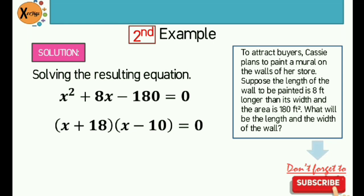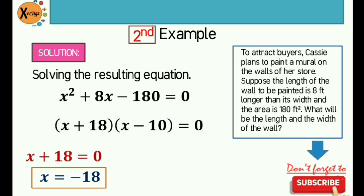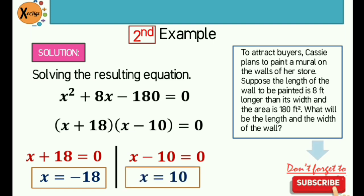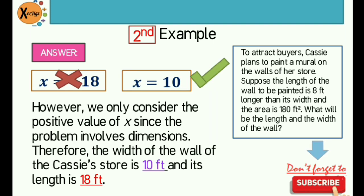Applying the zero product rule: x + 18 = 0 gives x = −18, and x − 10 = 0 gives x = 10. However, we only consider the positive value of x since the problem involves dimensions — there is no such thing as a negative measurement. Therefore, the width of the wall of Cassie's store is 10 feet. For the length, using x + 8: 10 + 8 equals 18 feet. So the wall is 10 feet wide and 18 feet long.